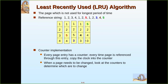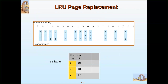So how can this be implemented? There are two ways: one is using a counter and another is using a stack implementation. In the counter implementation, each and every page has a counter. Every time a page is referenced, the current clock value is copied into the counter. When a page needs to be changed, we look at the counters to determine which one has the oldest clock value.